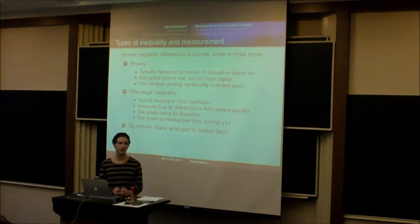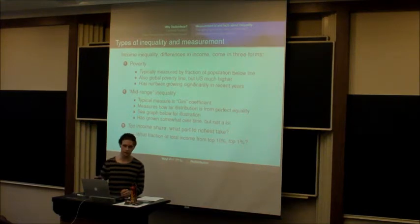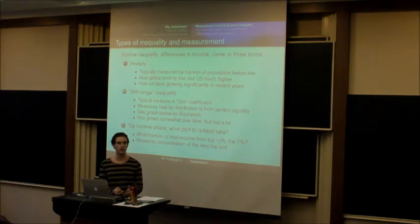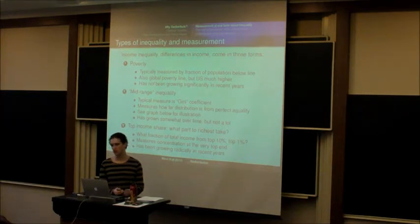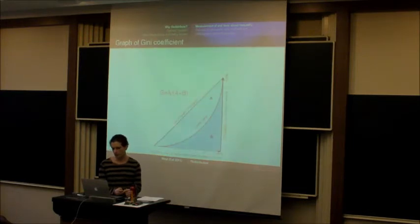Top income shares are the final type of inequality, and this measures inequality at the very top — what fraction of all national wealth is taken by the top 10%, the top 1%, the top 0.1%, and so forth. This measures the concentration of wealth at the very top, and this is the thing that has absolutely exploded when people talk about growing inequality. Poverty has not been growing very much, inequality overall has been growing a little bit, but a few people are making an enormous amount of money compared to everybody else.